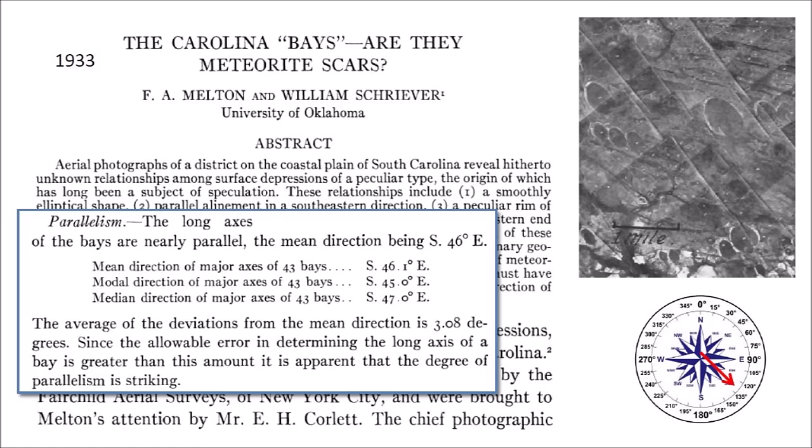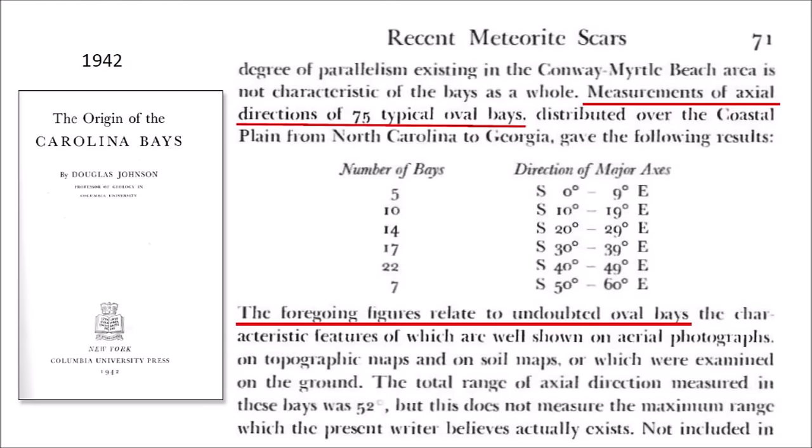Melton and Shriver always described the Carolina Bays as elliptical and defined the measure of ellipticity. In 1942, Professor Douglas Johnson from Columbia University proposed that the bays had been created by a complex process where lakes formed from artesian springs were later modified by wind and water mechanisms. Johnson consistently characterized the Carolina Bays as oval and refused to call them elliptical. His study of the axial orientations was intended to refute the meteor impact hypothesis by showing that the orientations were not parallel, as required by a meteor shower.